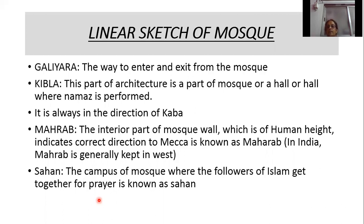The next part is Mihrab — it is the interior part of the mosque wall, of human height, and it indicates the correct direction to Mecca. Mecca is the place where Prophet Muhammad, the founder of Islam, was born. In India, the Mihrab is always in the western direction.